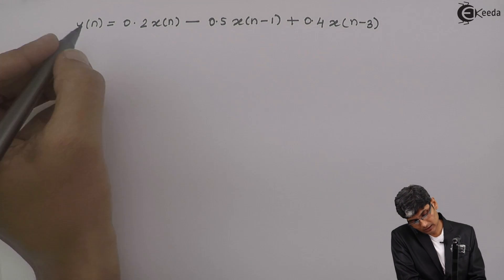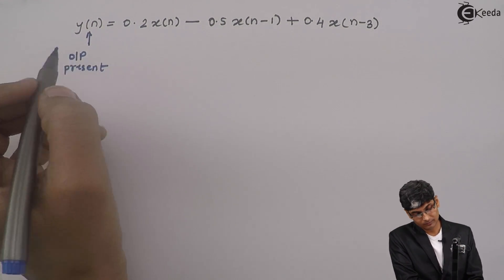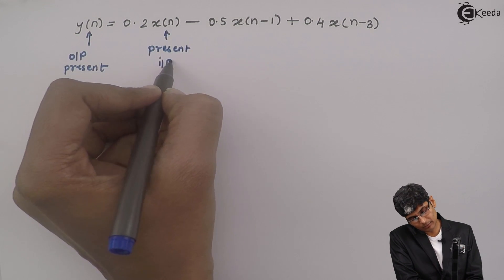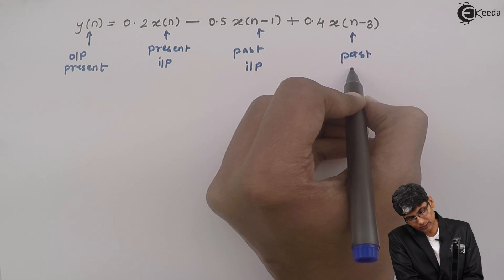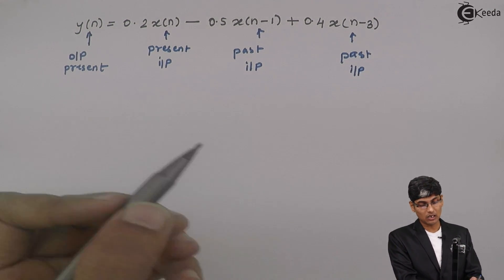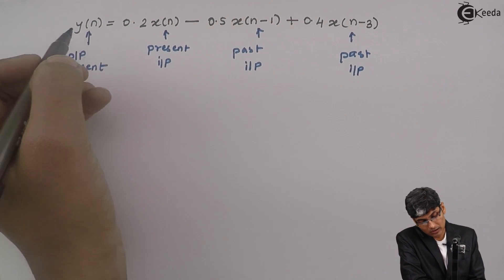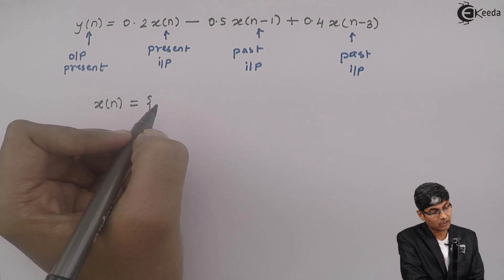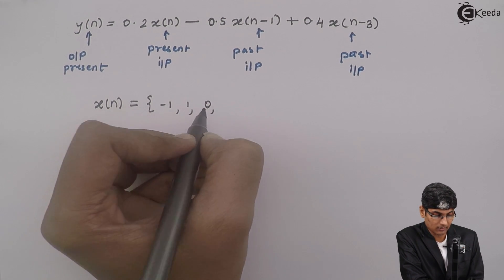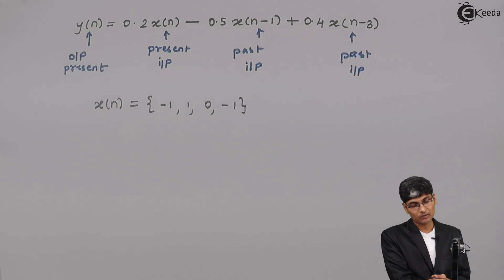The output is called the present output. It depends on present input, past input, and also past input. The output of the system should be found for the input sequence given as -1, 1, 0, and -1. This is the input signal that we have been given.